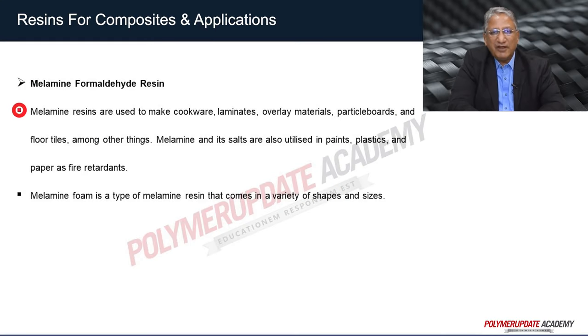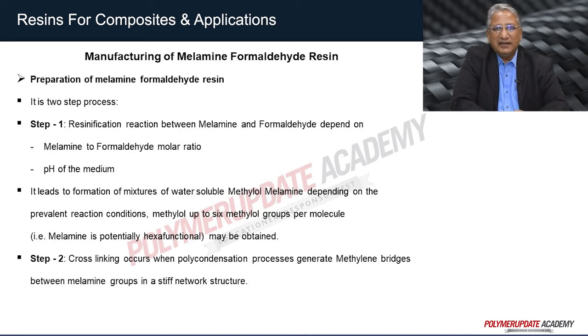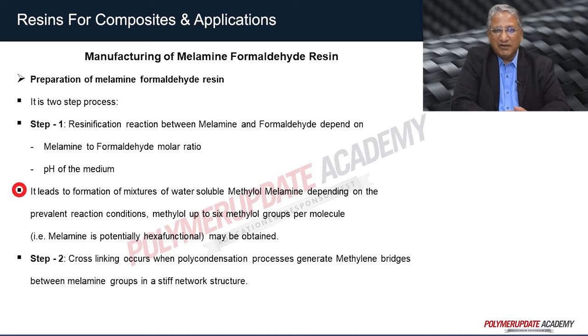Melamine resins are used for manufacturing a variety of products including kitchenware, laminates, overlay materials, particle boards, and floor tiles. Melamine and its salts are used as fire retardant additives in paints, plastics, and paper. Melamine foam is a special form of melamine resin. Manufacturing of melamine formaldehyde resin is a two-step process. Step 1 is a methylolation reaction between melamine and formaldehyde, depending on the melamine-to-formaldehyde molar ratio and pH, leading to formation of water-soluble methylol melamine. Up to 6 methyl groups per molecule may be formed. In Step 2, polycondensation forms methylene bridges between melamine groups in a rigid network structure, resulting in cross-linking.